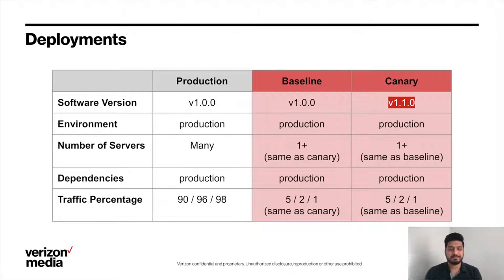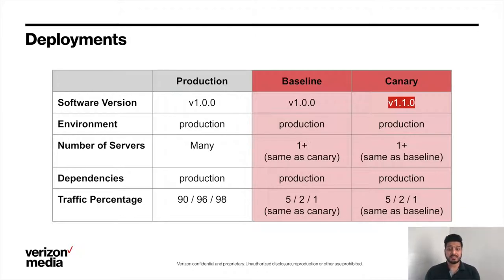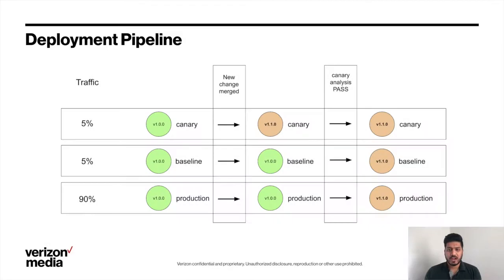Here's the same thing in table format. It's important to note that all three deployments are in your production environment, taking live production traffic. The downstream dependencies are the same as production. The only difference is the slice of traffic and the fact that canary has a new version of the code. For accurate canary analysis, it's very important that baseline and canary are exactly the same — number of servers, traffic split, etc. For example, you might send 90% of traffic to production, with baseline and canary receiving 5% each. When a new change is merged in the CD pipeline, the new code is deployed only to canary. Canary analysis is performed next, and if it passes, baseline and production deployments get the new code.